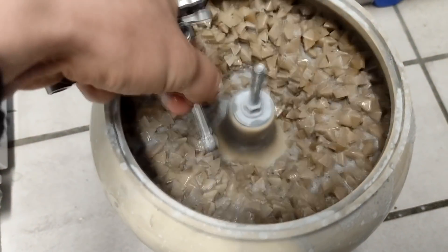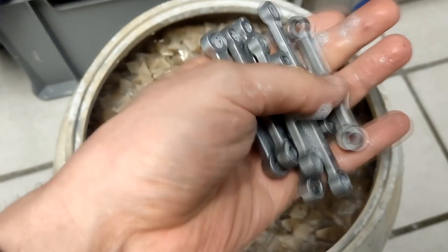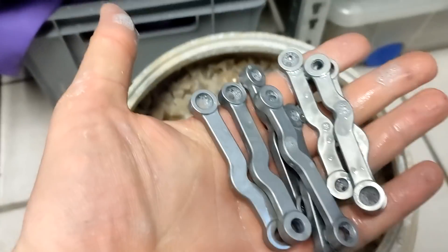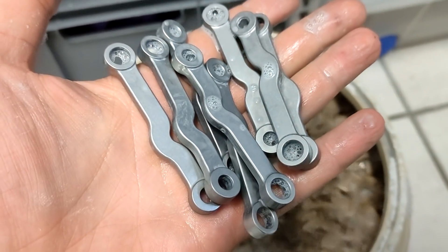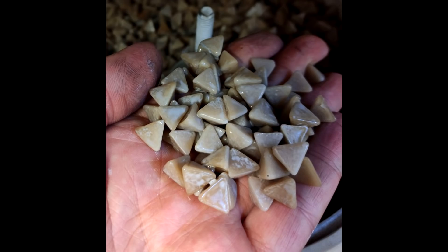For finishing, these parts go in the vibratory tumbler with some abrasive media. This evens out all the remaining tool marks and gives a nice overall finish. This is the media I'm using. These are pyramid shaped plastic stones with a abrasive embedded and these work very well for material removal and an even finish.